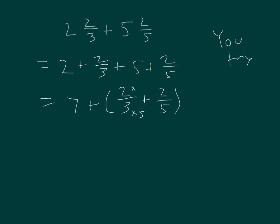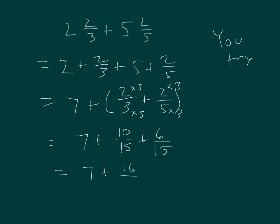I'm going to show my work here. That's equal to 7 plus 10 fifteenths plus 6 fifteenths, equals 7 plus 16 fifteenths, equal to 7 plus 1 and 1 fifteenth, which is equal to 8 and 1 fifteenth. That answer is in simplest form. Check alongside your work.